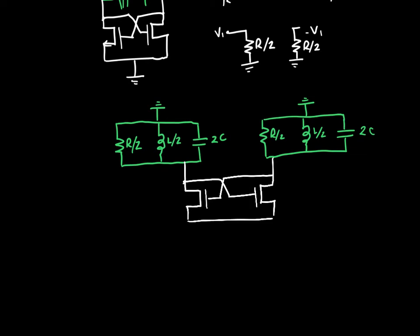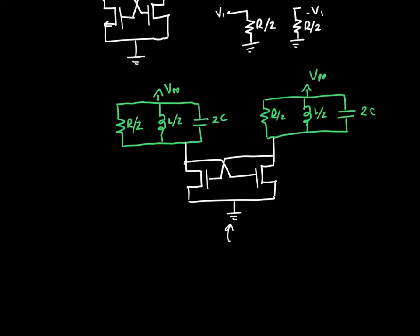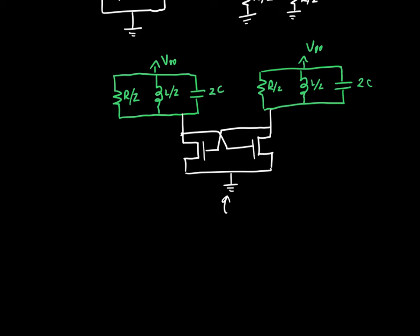You might say, well, how has this helped us at all? We're still just connected between ground and ground. But this doesn't actually have to be ground. This one up top can be AC ground, because recall the small signal model is a model that's applied only at AC or changing frequencies. So we can actually connect these nodes to VDD. And now this is starting to look more like an actual circuit. So we've got a power supply up here, we've got a ground up here. So we've got a way of connecting these transistors to power.